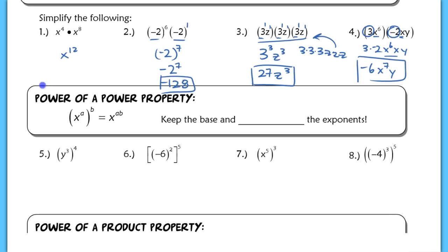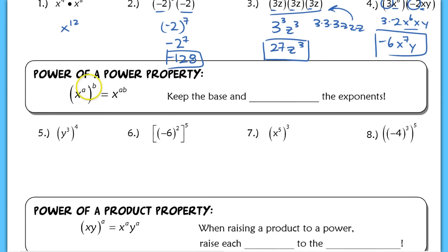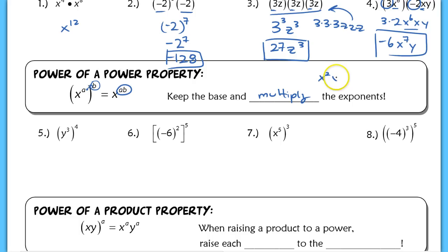My next rule is the Power of a Power property. You only use this when you have a set of parentheses with an exponent raised outside of those parentheses. When you see that, you simply distribute and multiply — you're finding the product of those two exponents. You keep your base and multiply the exponents. So this is different from what we just talked about: x squared times x to the third, we add our exponents. But when we see x squared to the third power, we multiply those exponents to get x to the sixth.